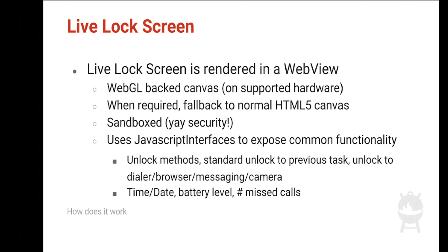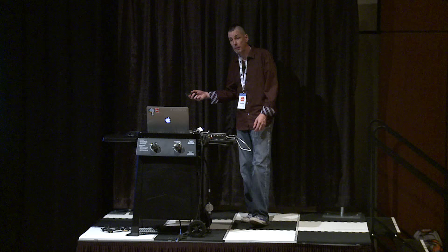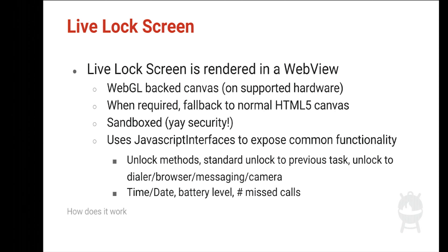We use the JavaScript interface for things like unlock methods — it's a lock screen so users need to unlock it, but how they unlock is up to the theme designer: swipe left to right, draw a circle, push a button. Users can also unlock directly to common apps like MMS, browser, phone, and camera. We also provide basic data to the JavaScript side: time and date formatted in the user's locale, battery level and charging state, missed calls, and unread messages and emails — just the counts, not the content.